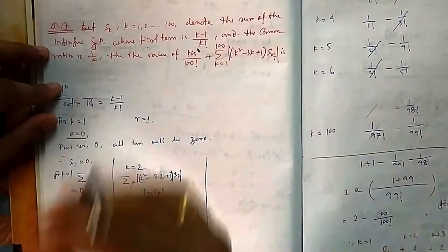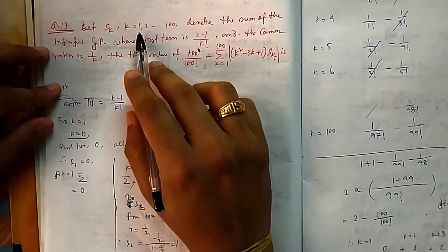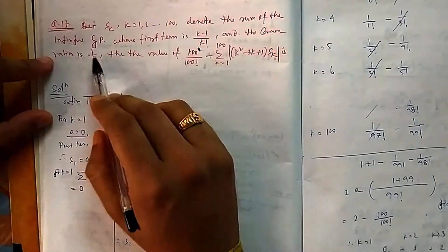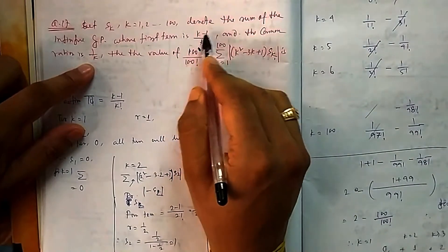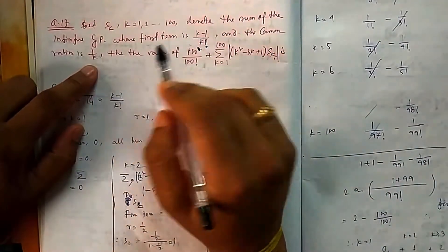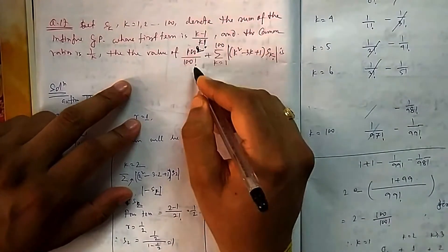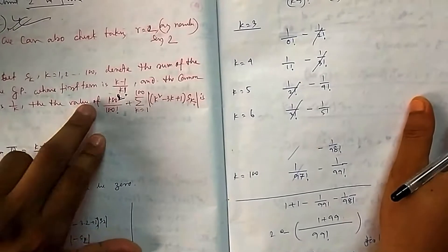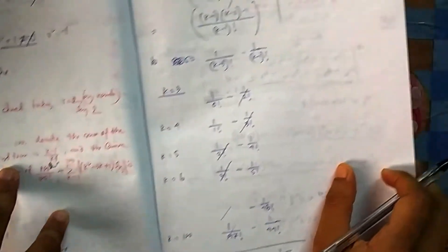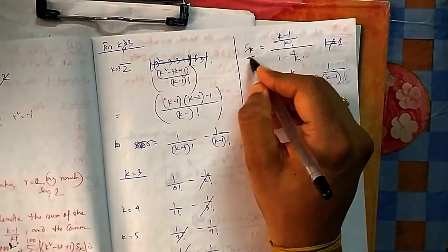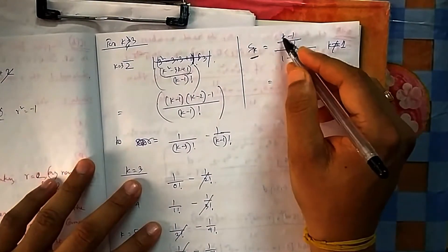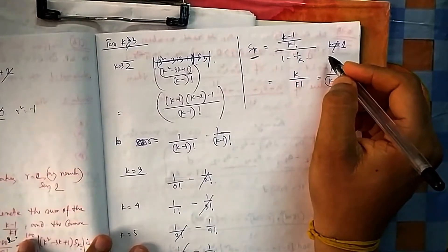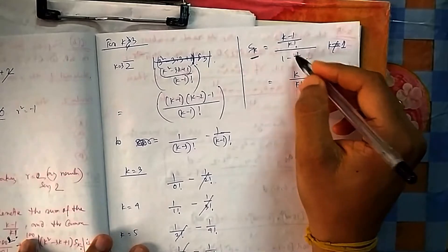In question number 17, if S_k for k from 1 to 100 denotes the sum of an infinite GP whose first term is (k-1)/k! and common ratio is 1/k, then you have to evaluate 100! plus a summation series. Before going further, let's calculate the sum of the infinite GP. The formula is S_k = a/(1-r). Note that k cannot equal 1, since that makes r=1 which is undefined.